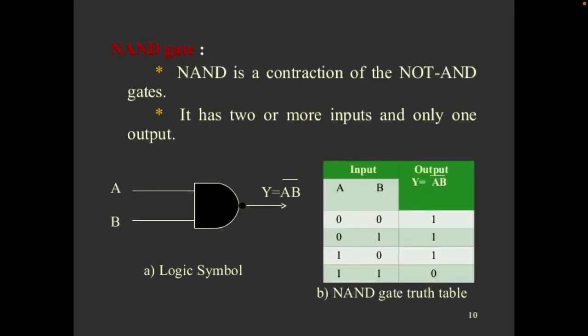NAND gate: In the construction of NAND gate, it has two or more inputs and only one output. The inputs are A and B. The output is Y equals A dot B. The value: either one is true, the value is true.